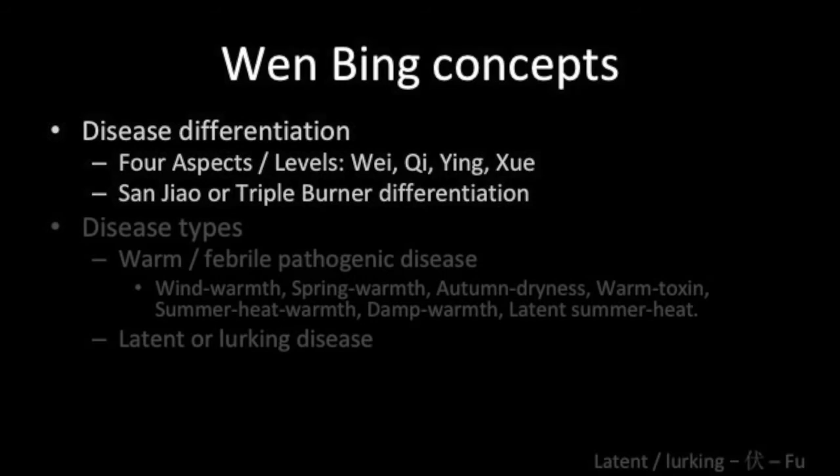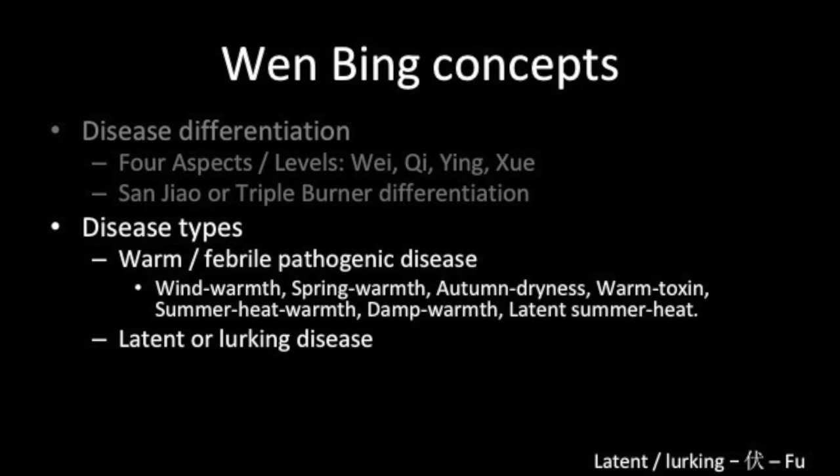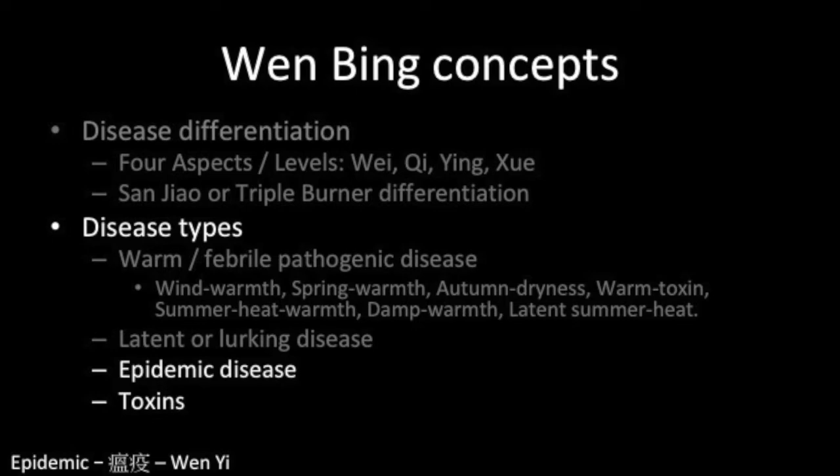Wenbing also presents a number of new disease types, including notions about their origin and development. A particularly interesting idea is that of a lurking or latent disease, where the disease has its origin in an earlier season but does not manifest itself until a later season. Toxins and epidemic disease were particularly relevant to those times, even though they had been discussed in texts centuries before.